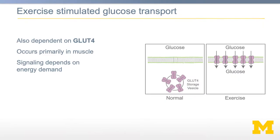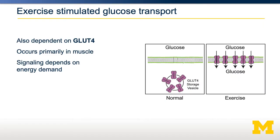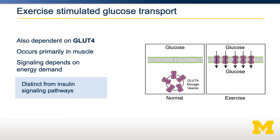But what about exercise? It turns out exercise uses GLUT4 as well. Upon stimulation of exercise and an induction of energy demand, GLUT4 storage vesicles are translocated to the plasma membrane, again allowing glucose to enter the cell down its concentration gradient. Critically, the mechanisms by which energy expenditure connects to GLUT4 transport are totally distinct from the mechanisms by which insulin stimulates glucose transport. This means that even if you are insulin resistant or type 2 diabetic, exercise-stimulated glucose disposal can still be an effective way of managing glucose levels.